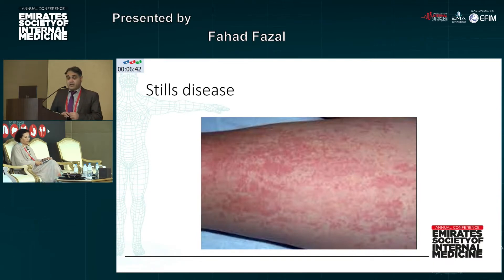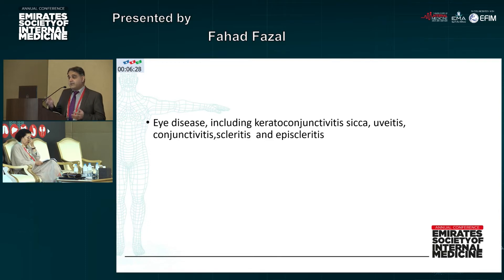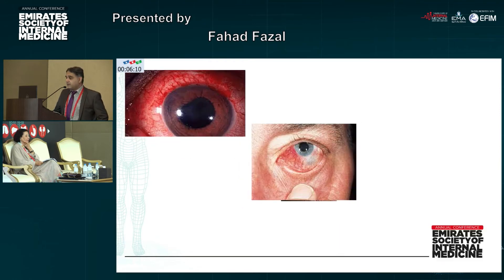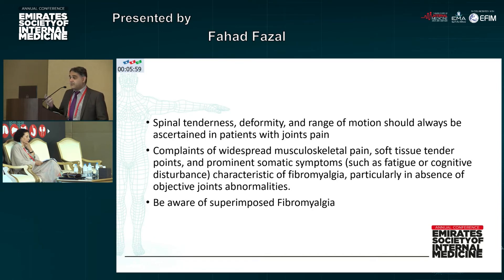This is the salmon-pink rash usually seen in people with Still's disease. Regarding eye problems, some patients may have a history of eye problems — they come with joint pain, but always ask about eye issues. If they have a red eye, look into it. The different eye presentations are keratoconjunctivitis, uveitis, scleritis, and episcleritis. You can see the different pictures here — dry mouth and dry eyes indicating keratoconjunctivitis, and scleritis and episcleritis. Also do the spinal examination to look for spinal tenderness and deformities. Always keep in mind fibromyalgia in patients who have generalized pain with no obvious physical findings.